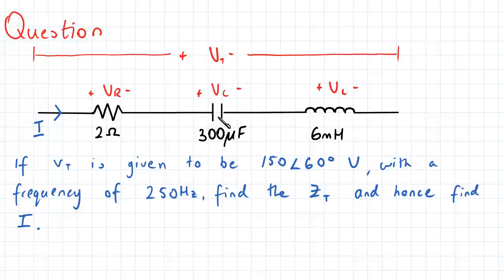Since it's a simple series circuit, there is a common current that flows through here. And the voltage drop across all three elements is given by the letter V subscript T. The question states that if V subscript T is given to have a magnitude of 150 and a phase of 60 degrees...